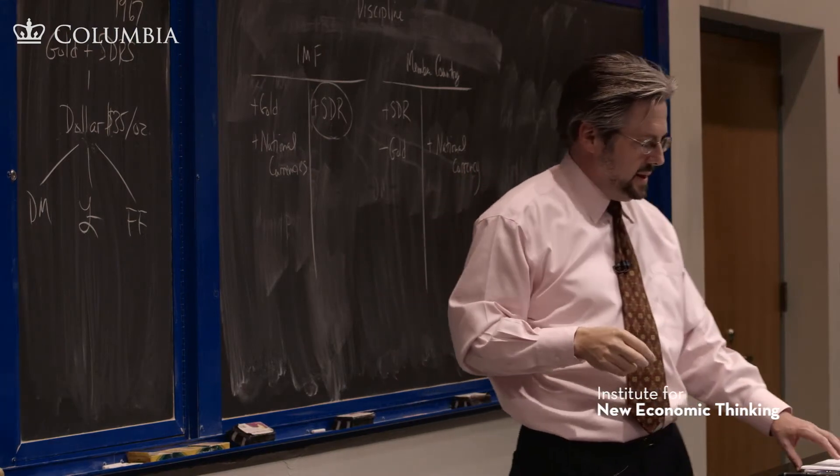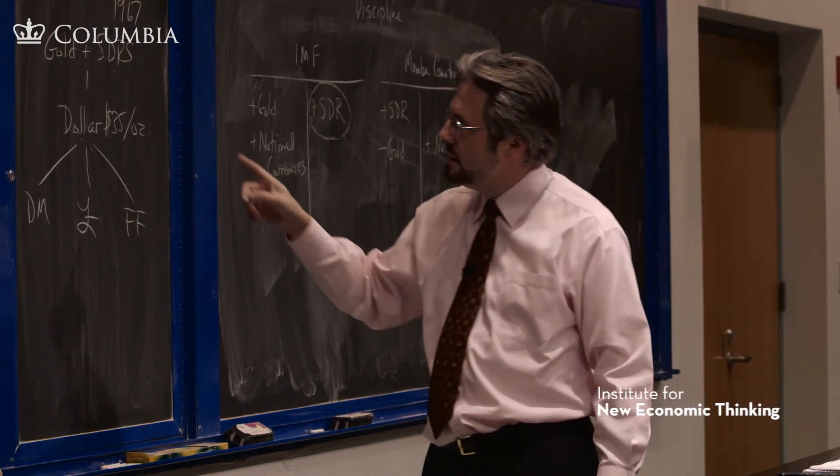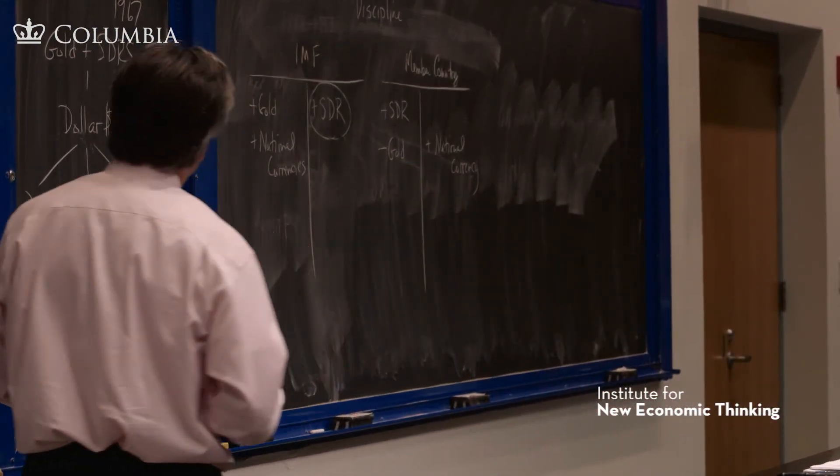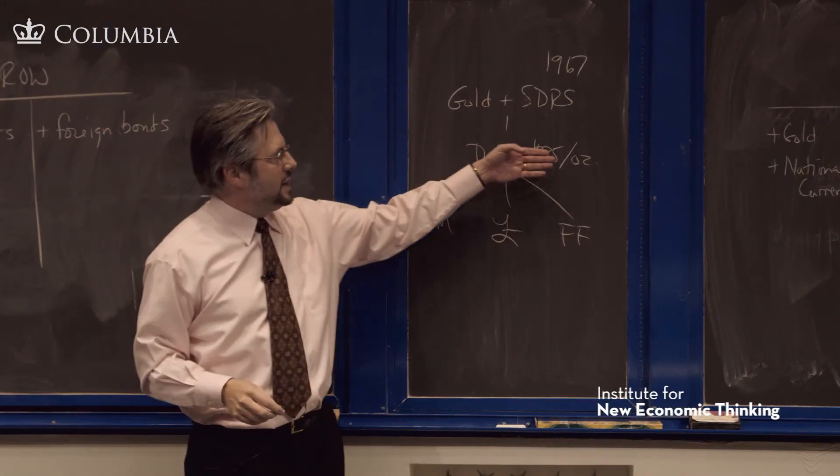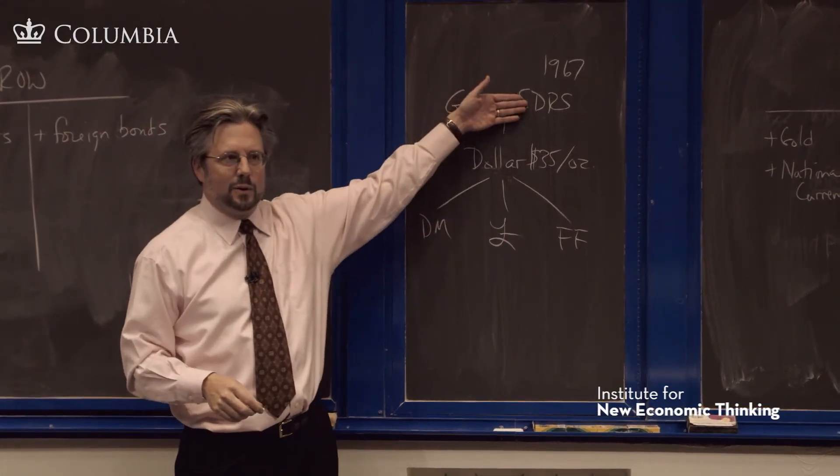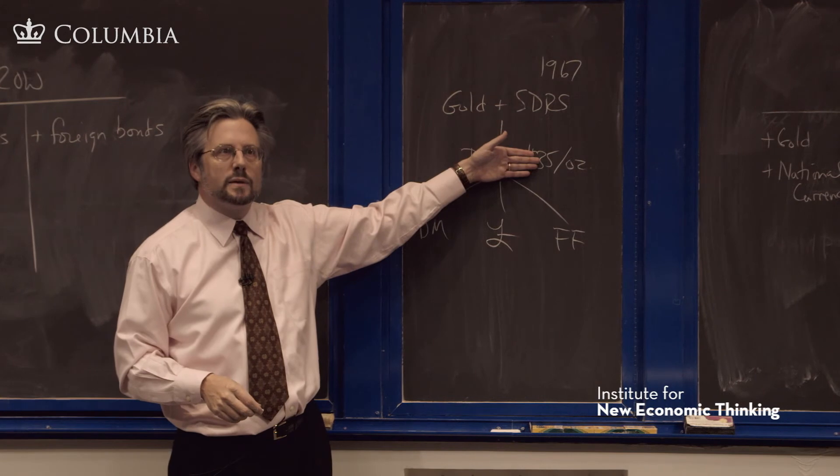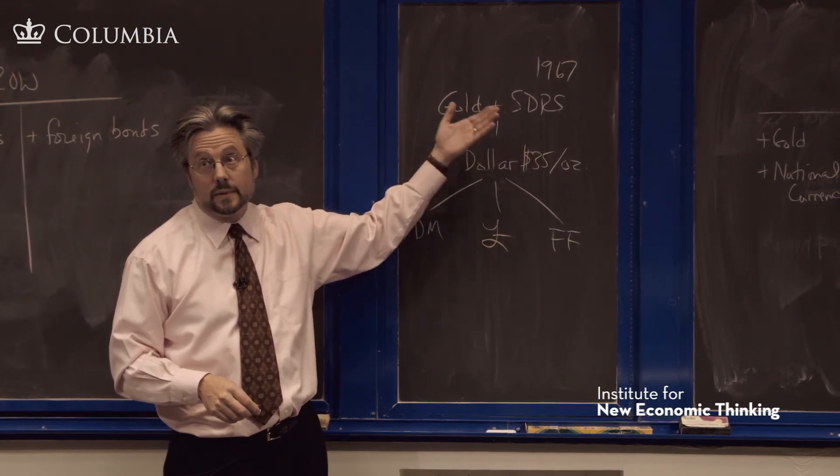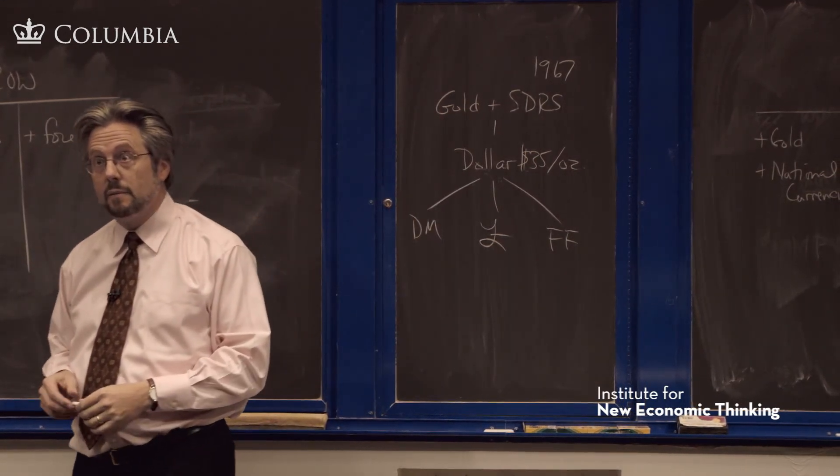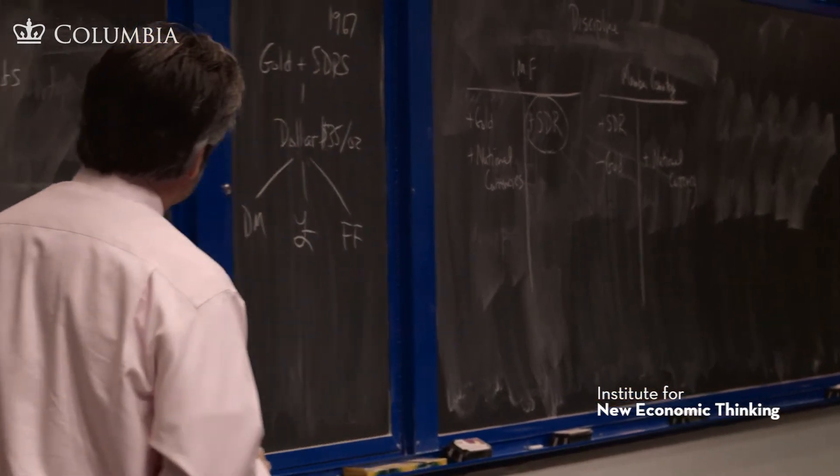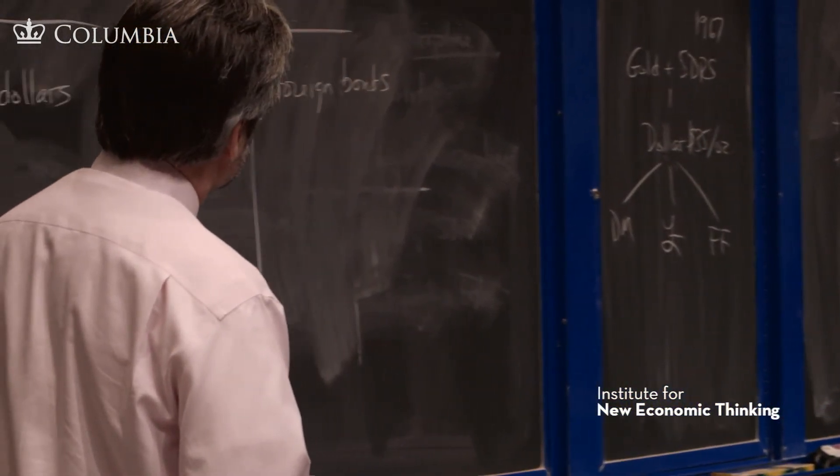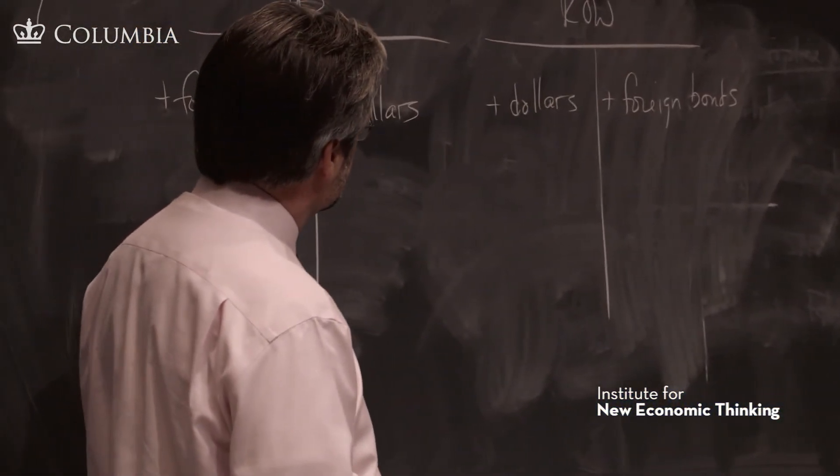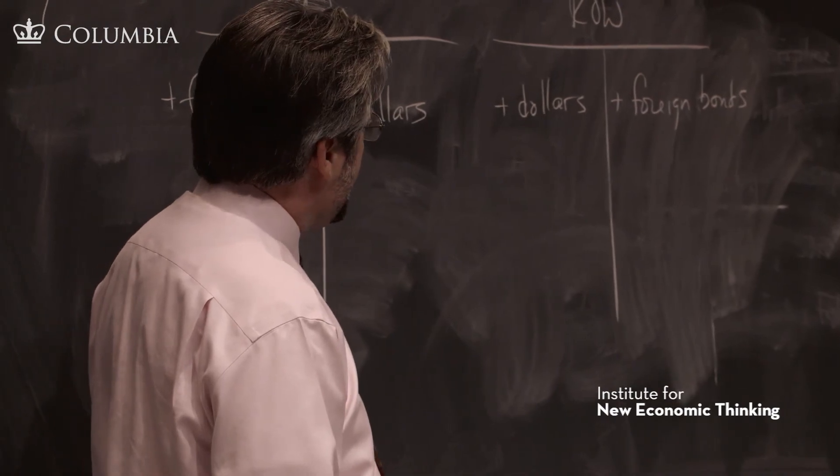So this is in 1968, that election. And by 1971, the problem of there being too many dollars and not enough gold winds up causing the US to go off gold, and that's the end of that system. That's the end of Bretton Woods.